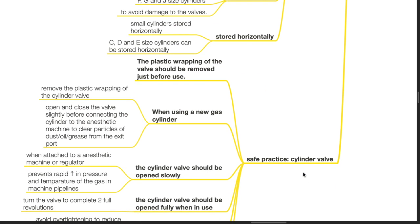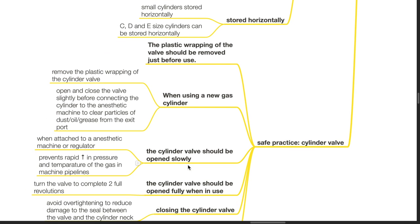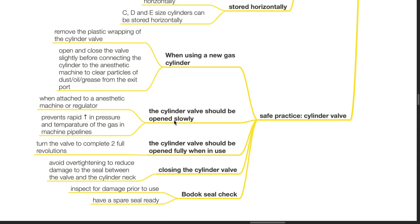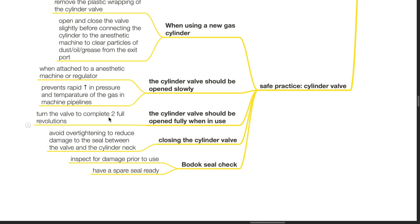Safe practice cylinder valve: The plastic wrapping of the valve should be removed just before use. When using a new gas cylinder, remove the plastic wrapping, open and close the valve slightly before connecting the cylinder to the anesthetic machine to clear particles of dust, oil, grease from the exit port. The cylinder valve should be opened slowly when attached to the anesthetic machine or regulator. This prevents rapid increase in pressure and temperature of the gas in the machine pipelines. The cylinder valve should be opened fully when in use. Turn the valve to complete two full revolutions. Closing the cylinder valve: Avoid over tightening to reduce damage to the seal between the valve and the cylinder neck. Bodock seal check: Inspect for damage prior to use and have a spare seal ready.